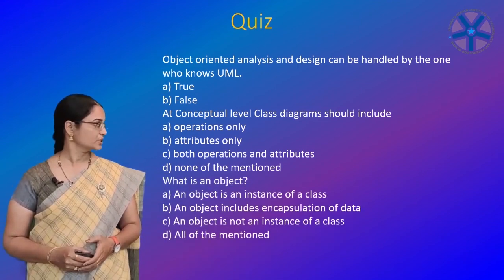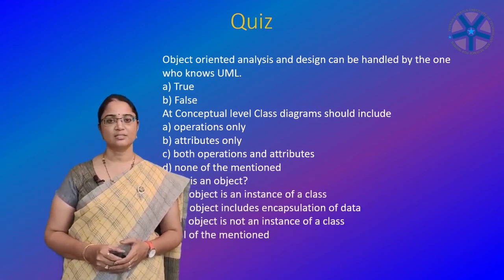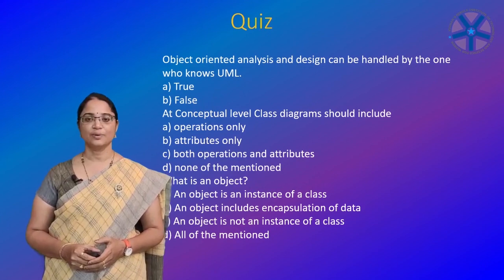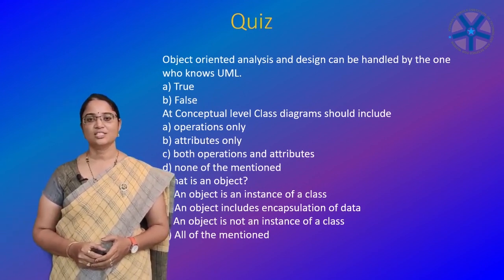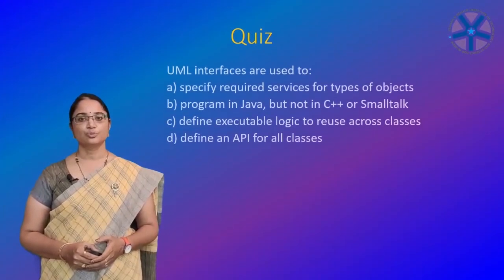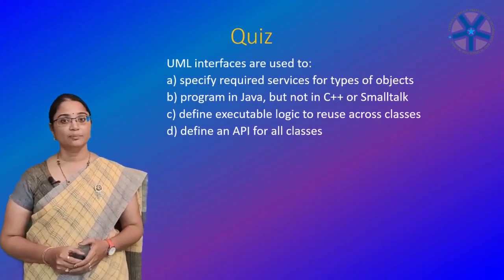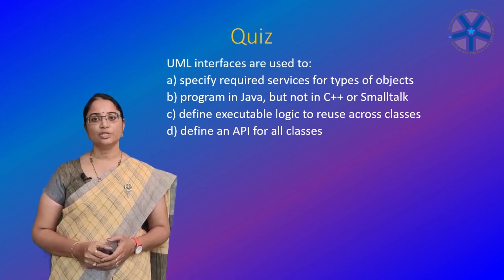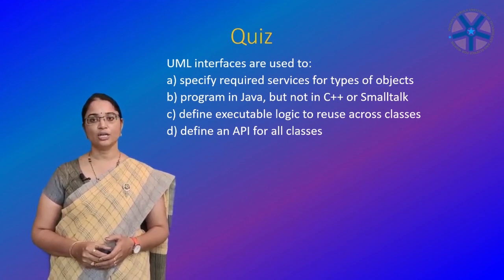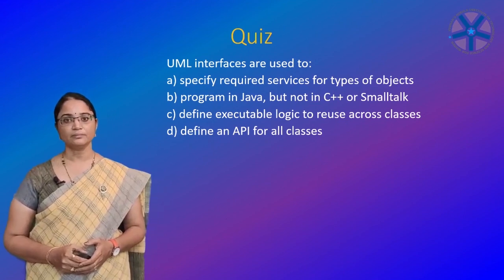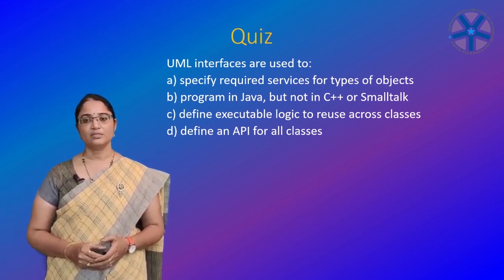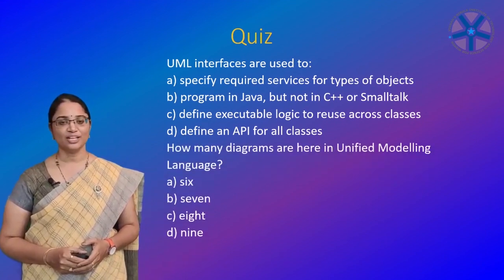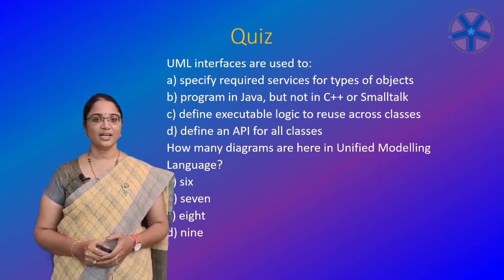What is an object? An object is an instance of a class and includes encapsulation of data. UML interfaces are used to specify required services for types of objects. How many diagrams are there in Unified Modeling Language? The answer is 9: class diagram, object diagram, use case diagram, collaboration diagram, sequence diagram, state chart diagram, activity diagram, component diagram, and deployment diagram.